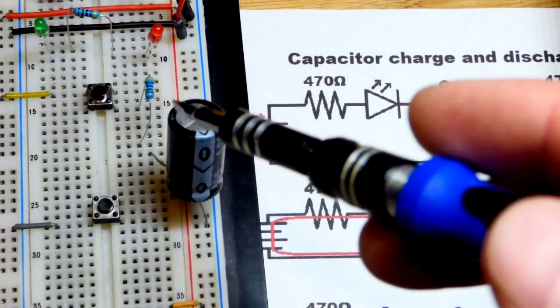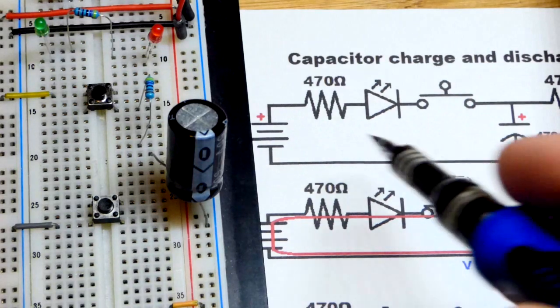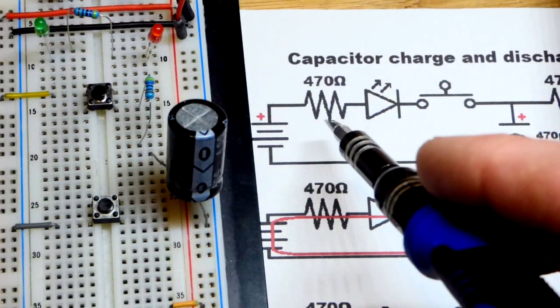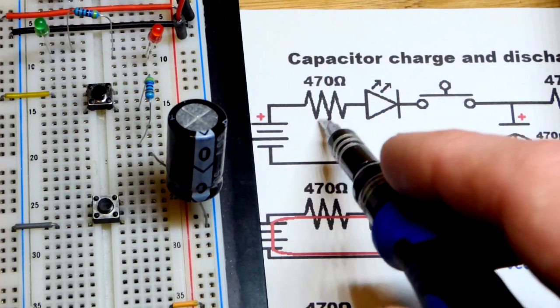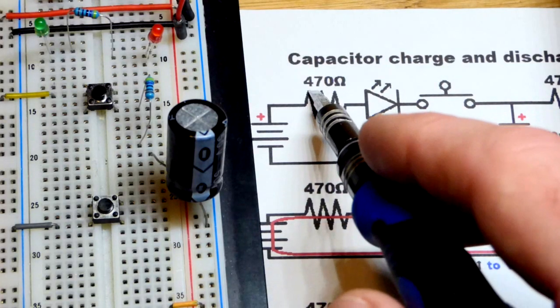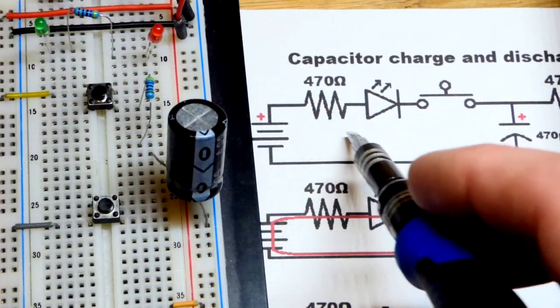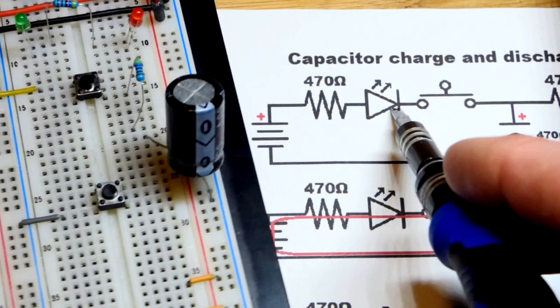As we saw before, the capacitor does not fully charge to the 9 volts and does not fully discharge to 0 volts. So in fact we're dealing with less voltage. We could lower the resistance, but we're going to stick with 9 volts and at least 470 ohms of resistance.